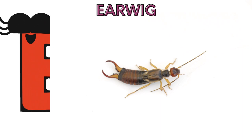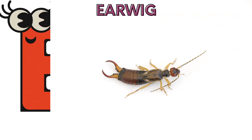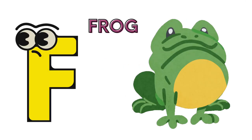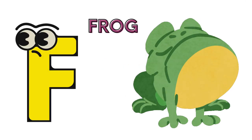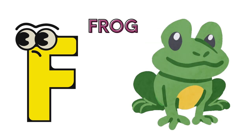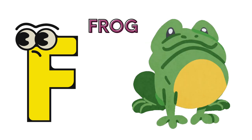E is for Earwig. E, E, Earwig. F is for Frog. F, F, Frog.